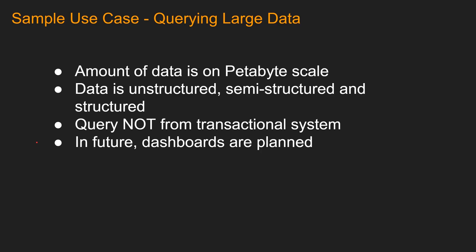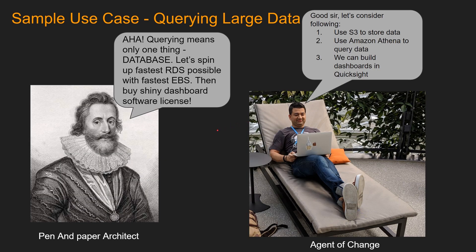Let's take a look at another use case: acquiring large data. The amount of data is on a petabyte scale, data is a mix of unstructured, semi-structured, and structured, the query is more like a data warehouse kind of query — not transactional — and dashboards are planned for the future. The pen and paper architect might say: querying means only one thing — database. Let's spin up the fastest RDS possible with the fastest EBS, then buy a shiny dashboard software license. However, you could achieve the same using S3 to store the data, Amazon Athena to query the data, and then build a dashboard in QuickSight.